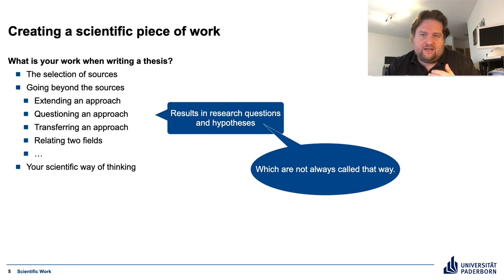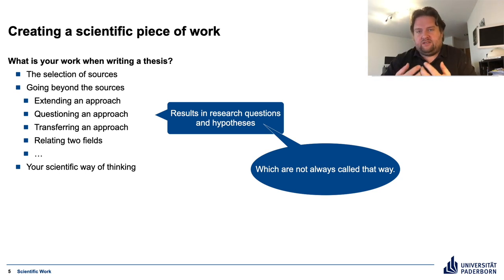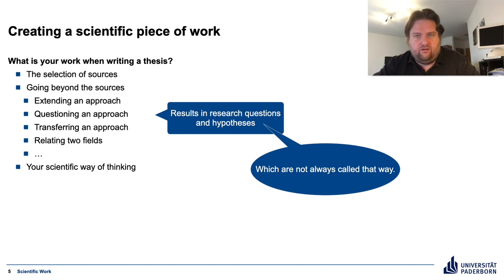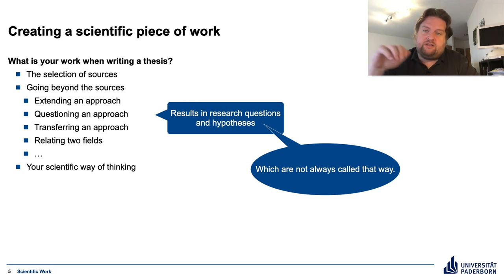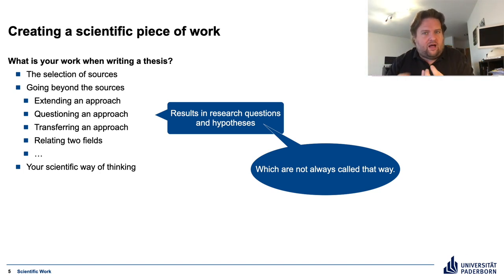You could also formulate that as a hypothesis. You think that when using Python, people learn programming better than when using Java — that would be a hypothesis. A hypothesis always needs to be supported by something. You cannot just formulate a hypothesis out of thin air. You have to have a good reason for it. So you typically develop that reason and then say, 'that leads me to the hypothesis that with a language like Python, programming can be learned way better than with a language like Java.' I'm making this all up — it's just to show you how those things fit together.